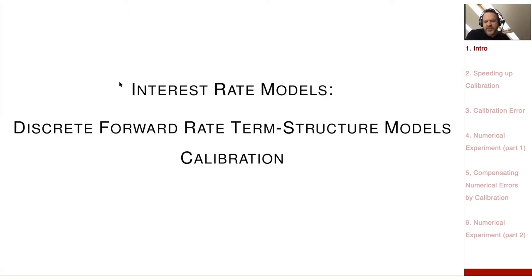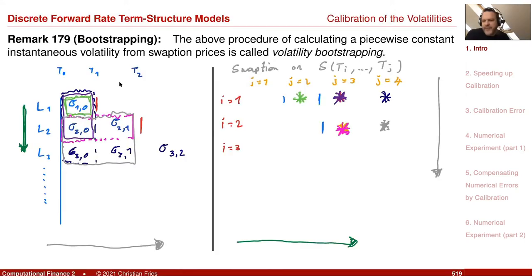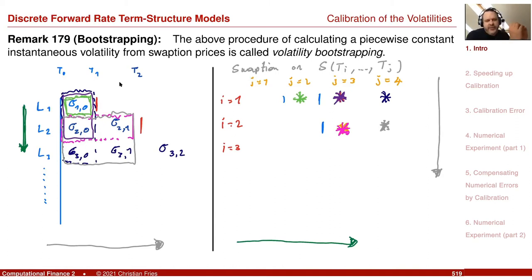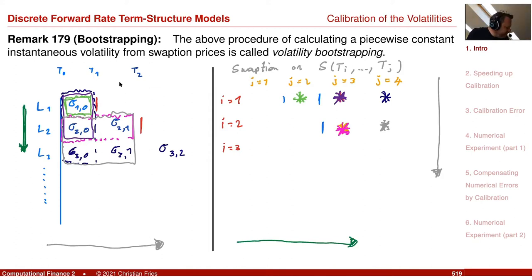One part was what is the influence of such a parameter. For example, we can use sigma to calibrate caplets, but surprisingly we could also link the parameter sigma to swaptions, namely in a very nice way. That's here a slide from one of our previous sessions, and we could establish the link that there is almost a one-to-one relation between forward rate volatilities and swaption-implied volatilities — specifically, which forward rate volatility block influences which swaption.